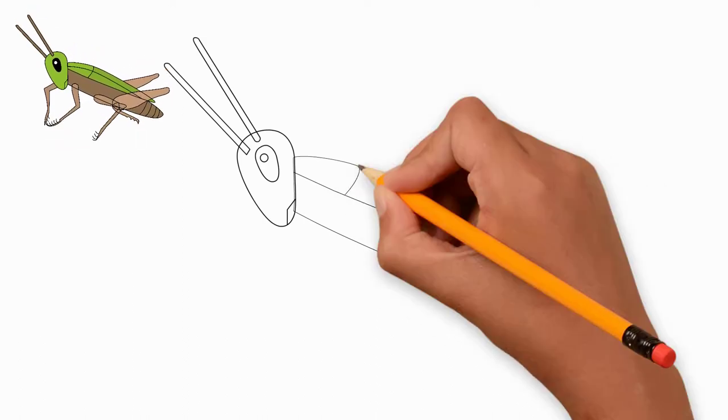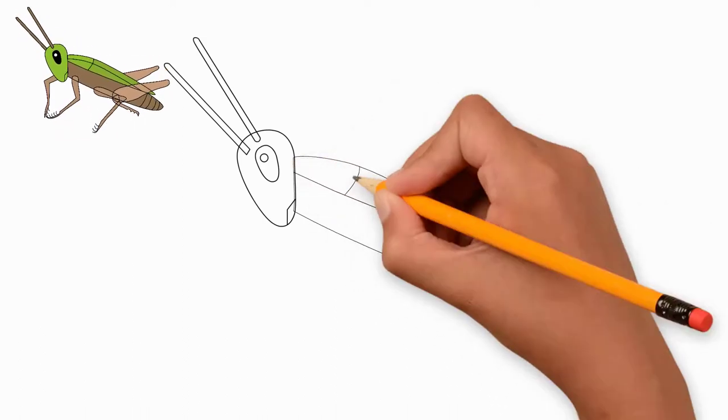At the top of the head draw an eye. Draw two horns on the head. They are the same.